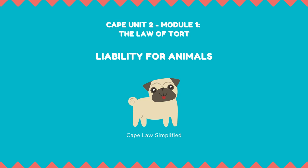First, the judge must decide whether the animal in question is to be classified as ferae naturae or mansuetae naturae on the basis of judicial notice or expert evidence. The court takes judicial notice of well-known everyday facts, such as that the sun rises in the east, and evidence is not required for such matters. Second, the court must be satisfied that the damage done was of the same class that the previous knowledge related to.